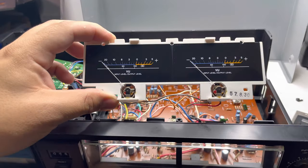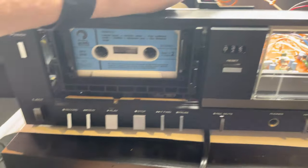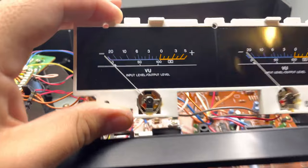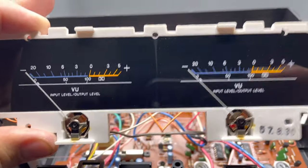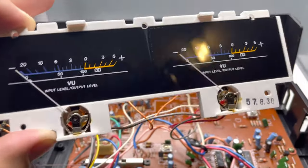Hey guys, so this is a quick tutorial. If you have one of these old cassette players and one of your VU meters is not working, there's a really easy fix actually.